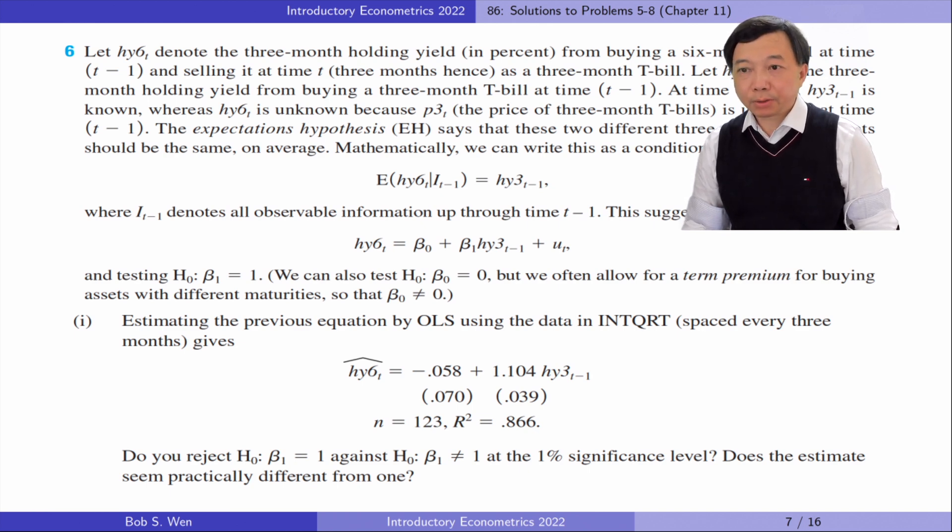Mathematically, we can write this as a conditional expectation, where I_{t-1} denotes all observable information up through time t-1. This suggests estimating the following model and testing the null hypothesis that beta_1 equals 1.